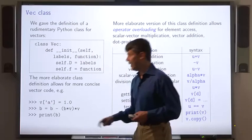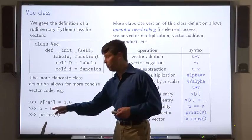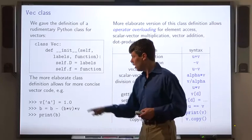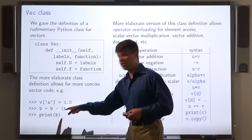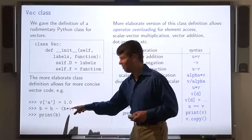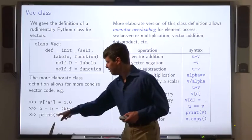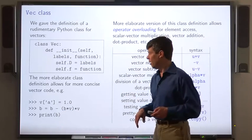This sets the A entry of V to 1.0. This assigns to the variable B the vector obtained by subtracting from the current value of B, a vector, a scalar multiple of V. And the scalar is the dot product of the current value of B with the vector V. And this prints the vector B in a nice format.